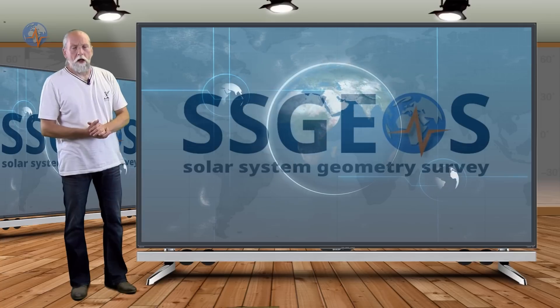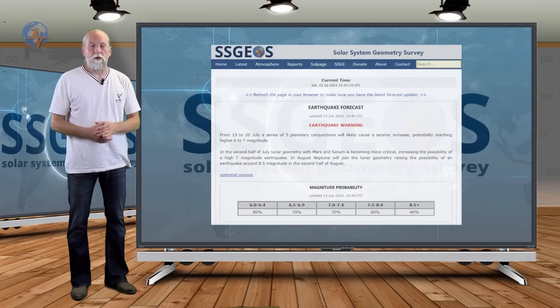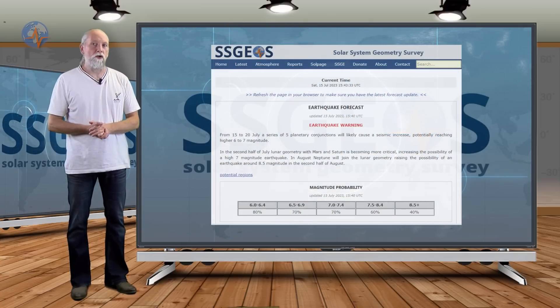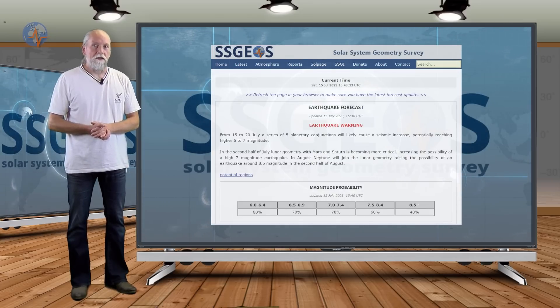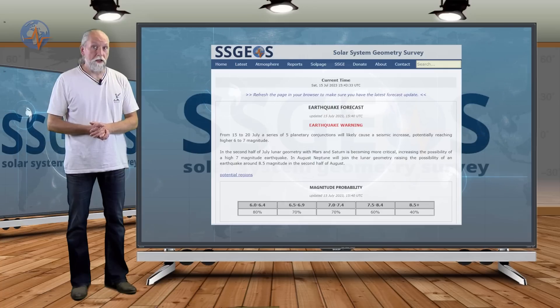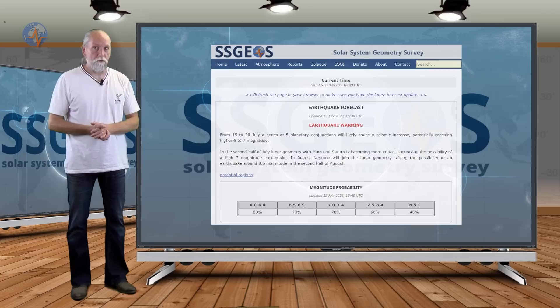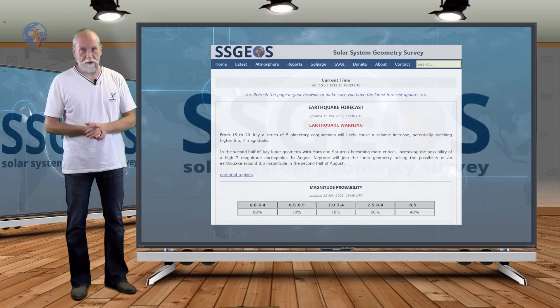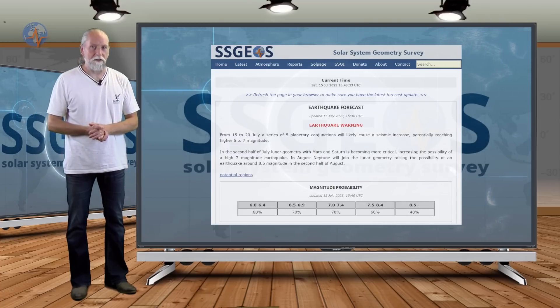You can look up the latest fluctuations on the website and also the latest forecast and magnitude probability. Check them out regularly. This is the update for now. Be on watch in the coming week because we have a bunch of planetary conjunctions coming up and they may trigger pretty strong seismic activity, especially because of the position of Earth between Mars and Saturn. Stay safe until next time.